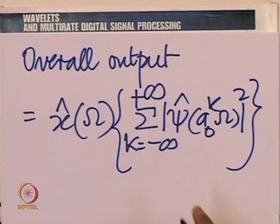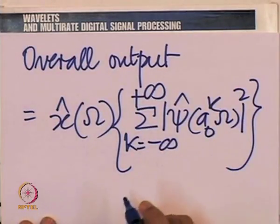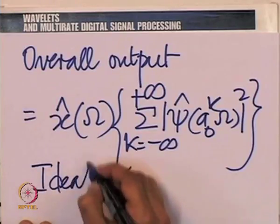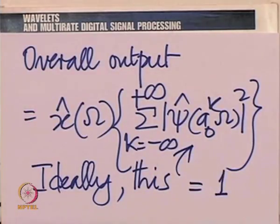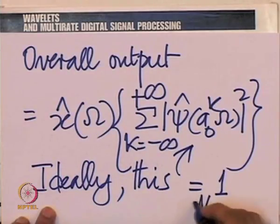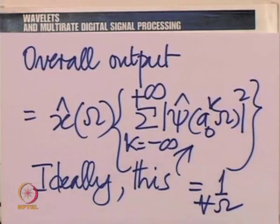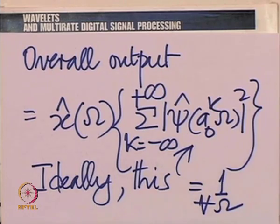A minute ago we saw what this was for the ideal situation. Ideally, this sum should equal 1 for all omega. That is the challenge: we want it to equal 1 for all omega while using time-limited functions. How do we relax in the frequency domain if we want to meet this challenge?